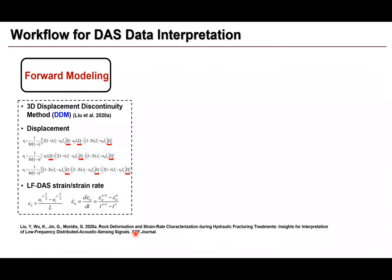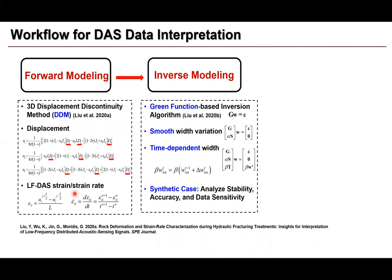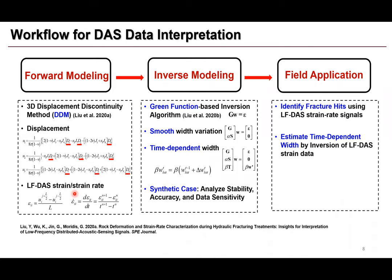This is our workflow for DAS data interpretation. First, we develop a forward model based on the 3D displacement discontinuity method to calculate displacement, strain, and strain rate on the fiber. We use this forward model to understand the mechanism of strain rate during fracturing and to propose guidelines for fracture hit identification. Based on this forward model we generate a Green's function and develop an inverse model to calculate fracture width, fracture height, and predict fracture length. Finally, we build a tool package for easy field application.